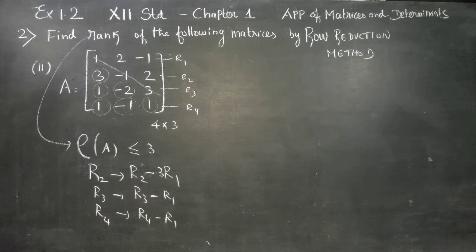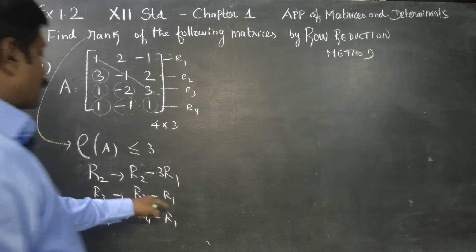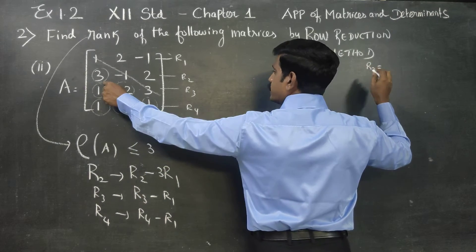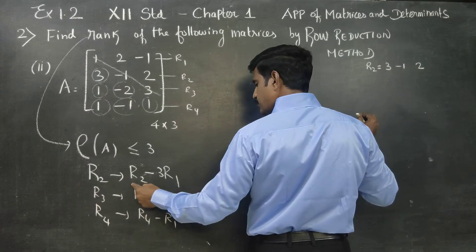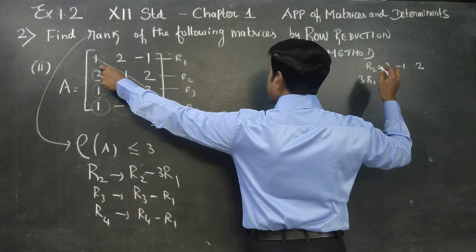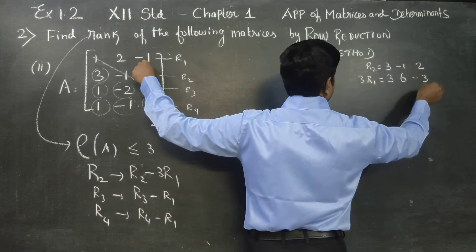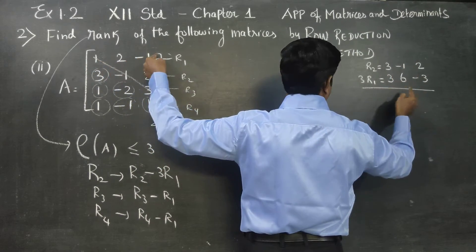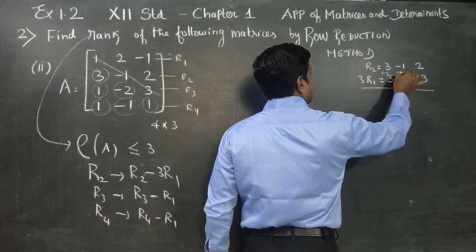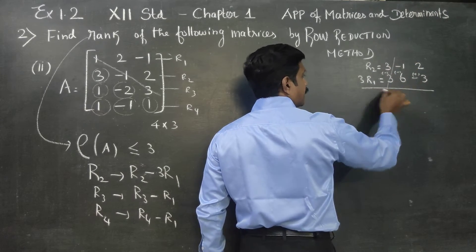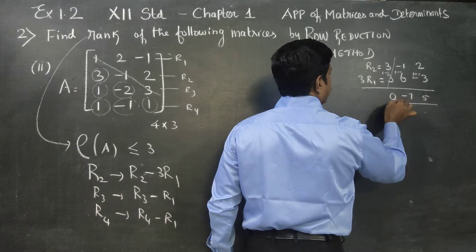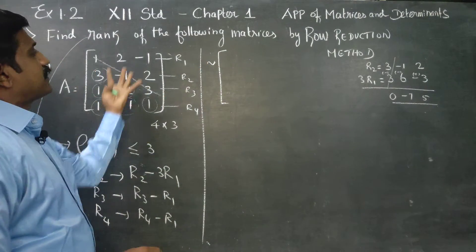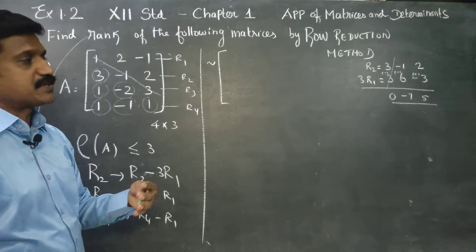I'm going to the rough side: R2 minus 3R1. What is my R2? 3 minus 1 is 2. R2 minus 3 times R1: 3 times R1 is full 3. So 3 twos are 6, 3 ones are 3. R2 minus 3R1: that is cancel out, that is 0; minus 1 minus 6 is minus 7; 2 plus 3 is 5. This is an equivalent symbol — elementary transformation. First row is 1, 2nd row result is 0, minus 7, 5.